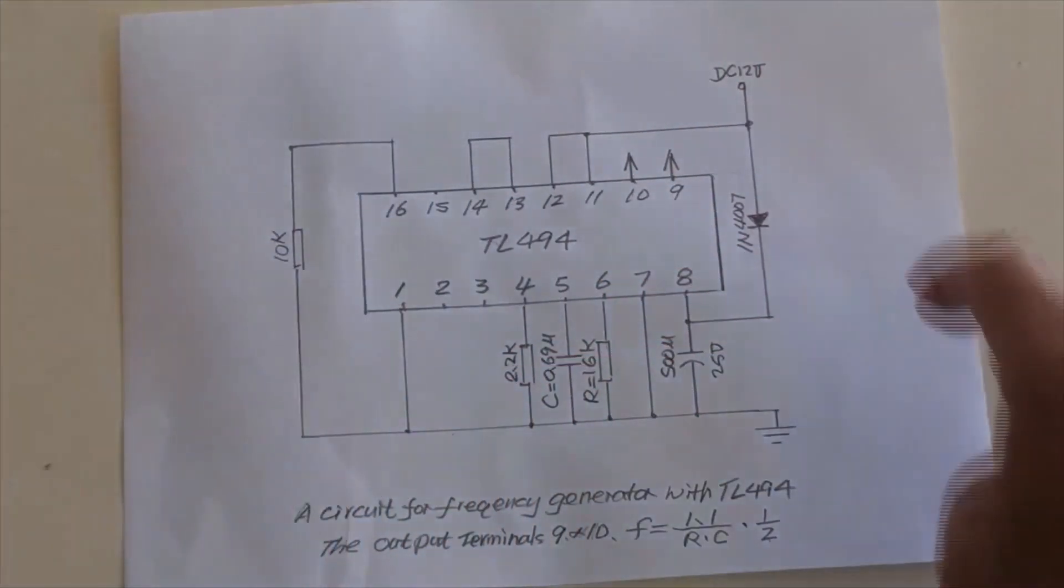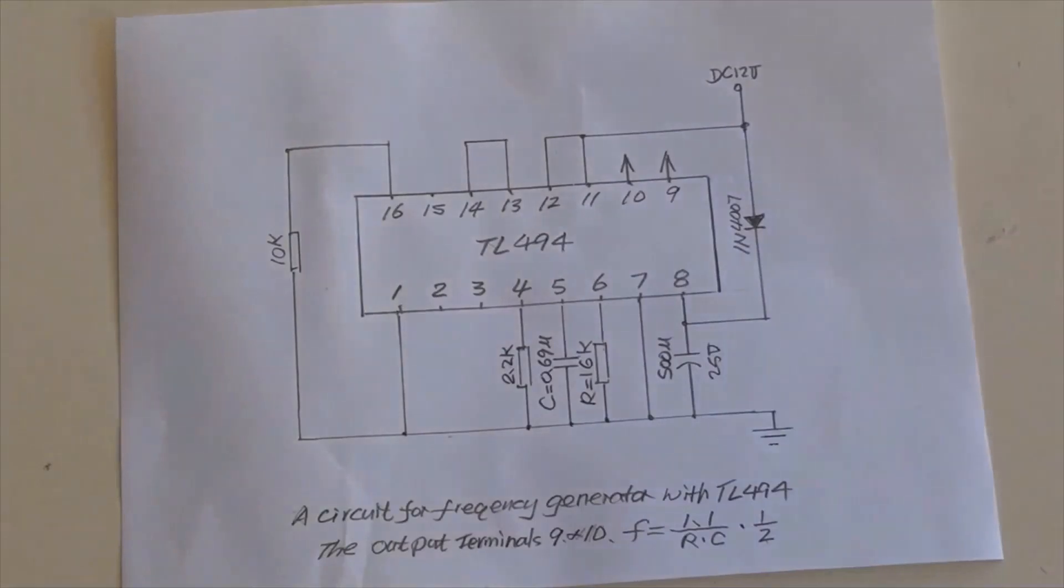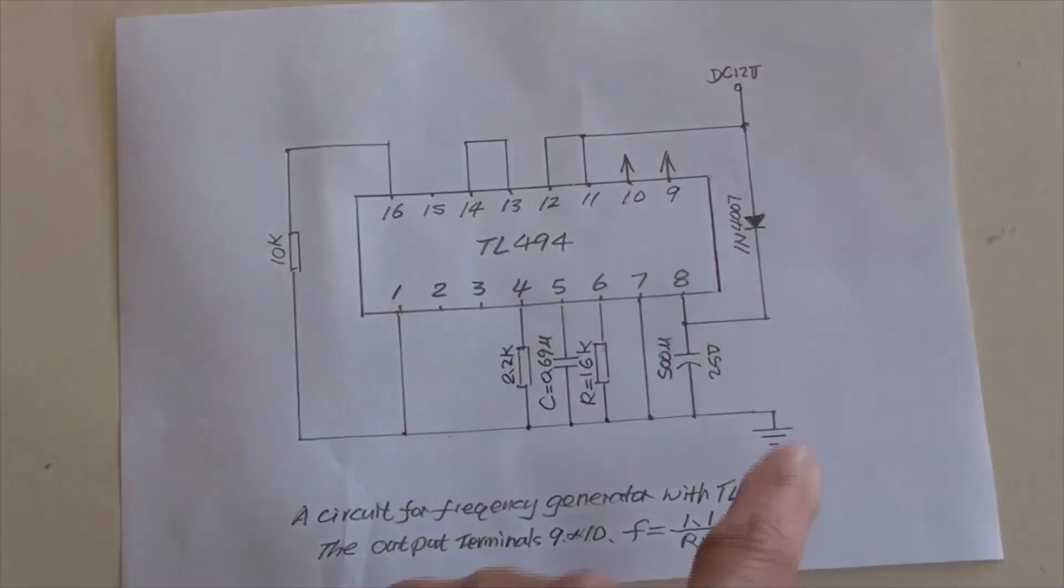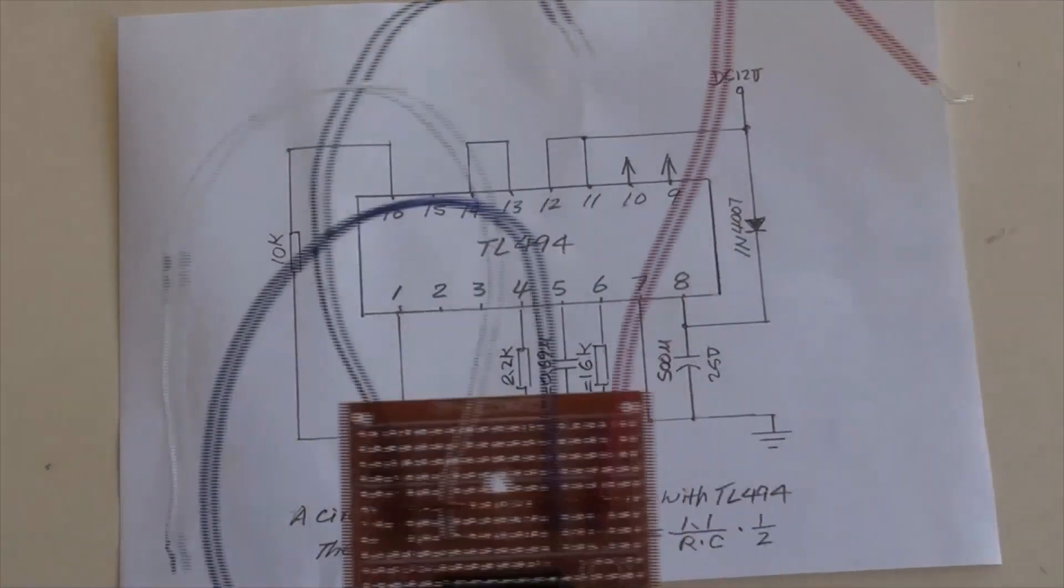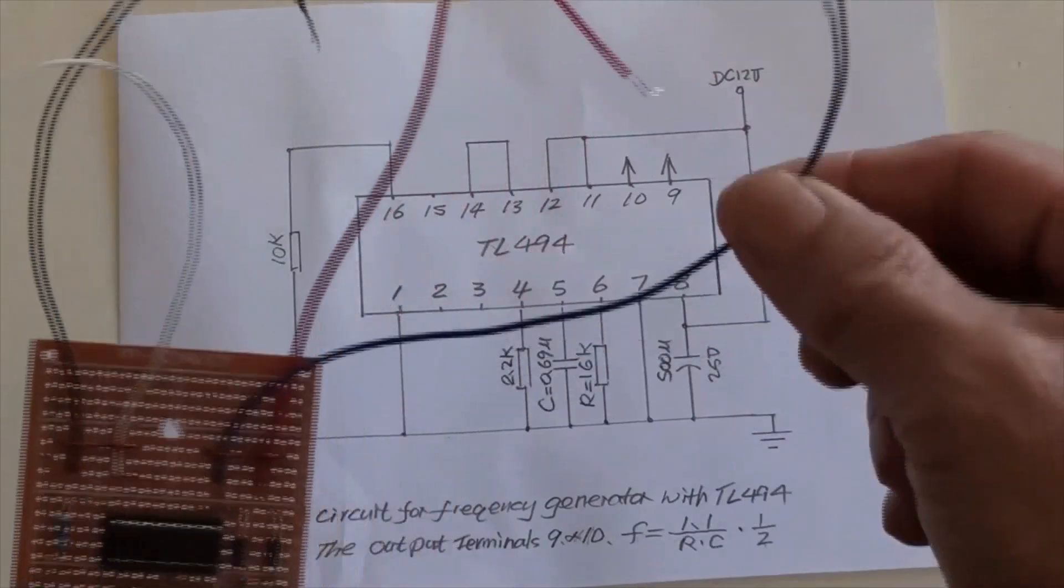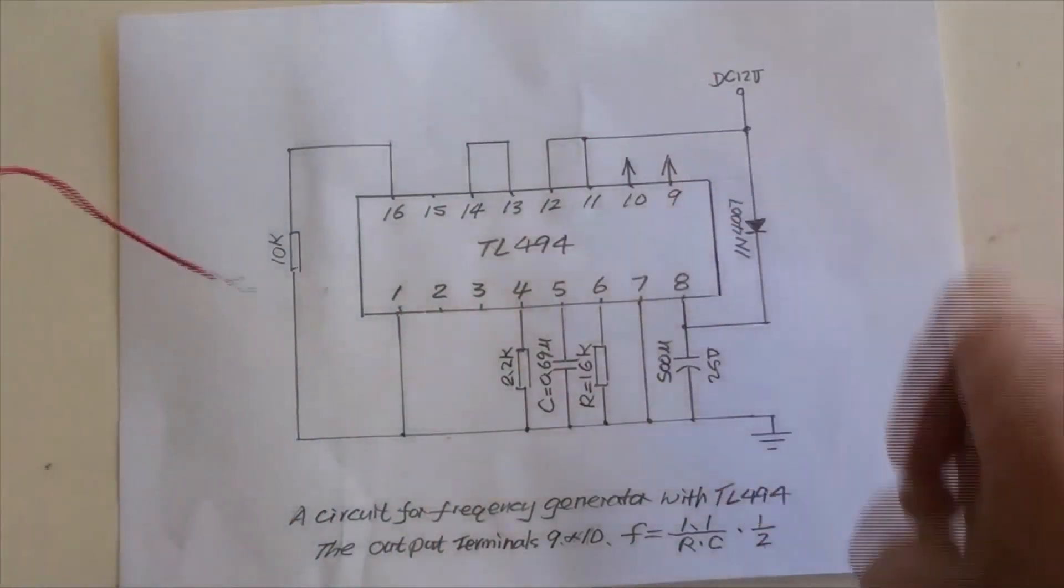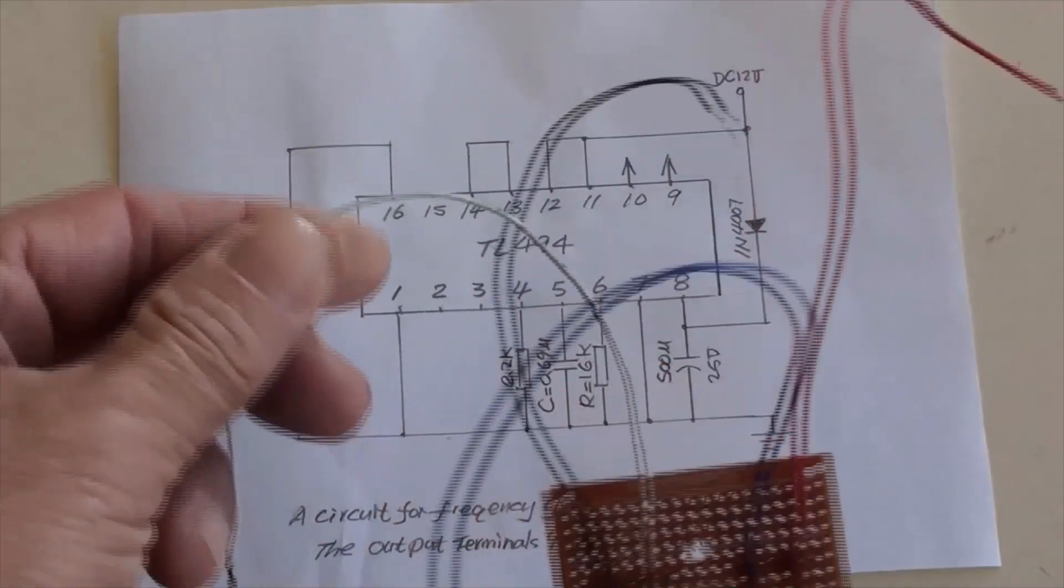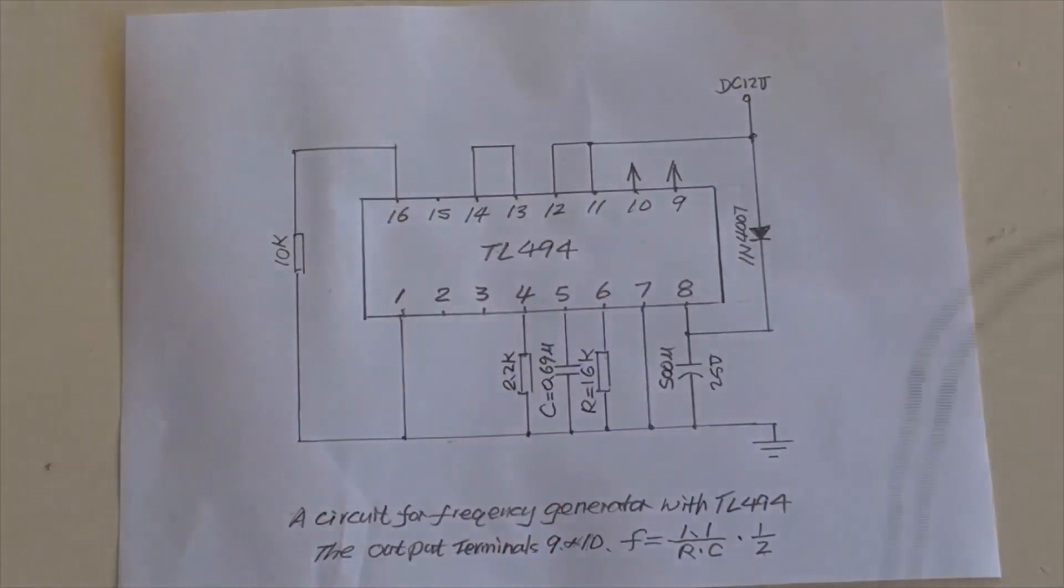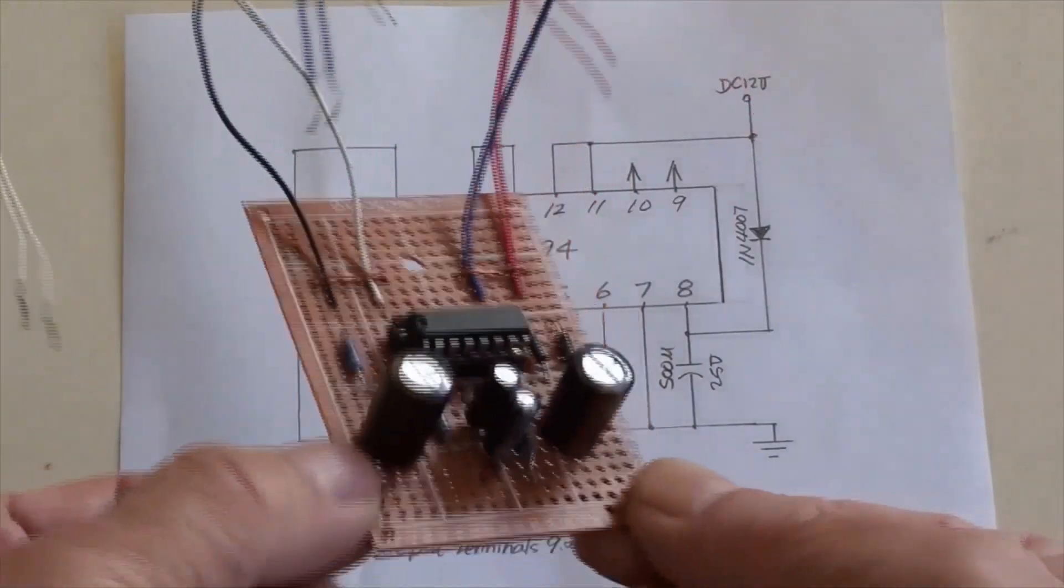This red wire is for DC positive such as 12 volt. That black wire is for DC negative or ground. Blue wire is the oscillator's output terminal 9, and so output terminal 10 is white wire. That's it.